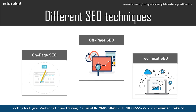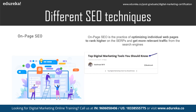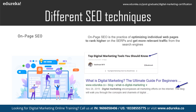On-page SEO is the practice of optimizing individual web pages to rank higher on the search engine result pages and get more relevant traffic from search engines. As the name suggests, it optimizes the content present on the page — such as title tags, meta tags, meta description, keyword density, URL of the page, and so on. As long as you focus on paying more attention to your content and the way it is presented to your viewers, you're in safe hands.